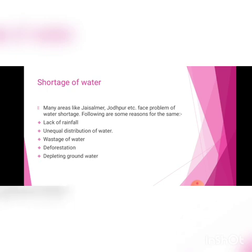Next is depleting groundwater. We know that our earth acts like a sponge — it absorbs water whenever rain comes. If there is no rainfall, there will be no replenishment of groundwater, and we will face the problem of water shortage.